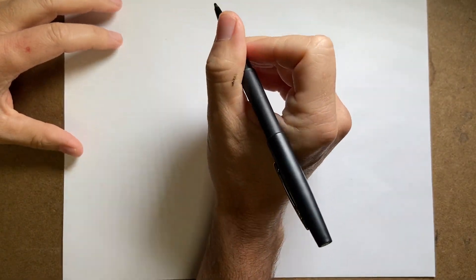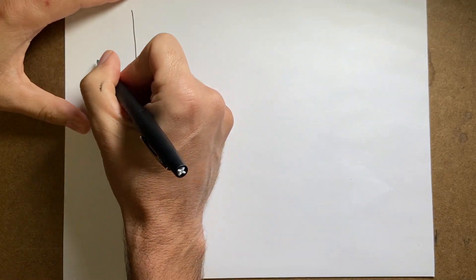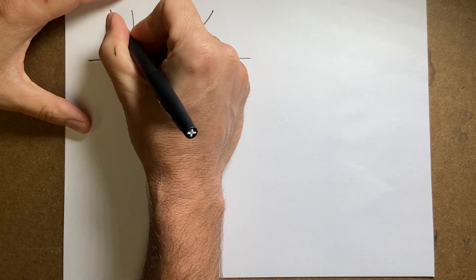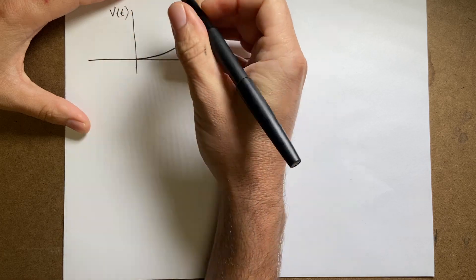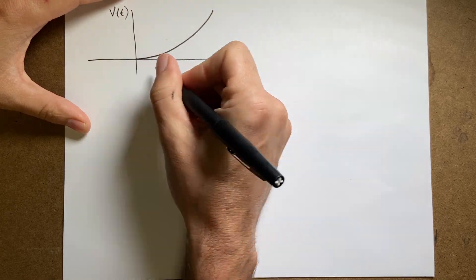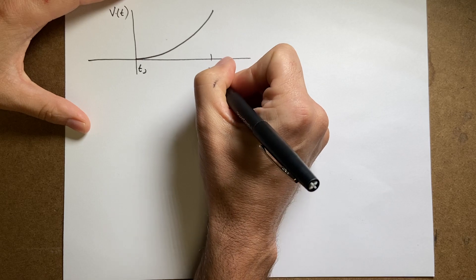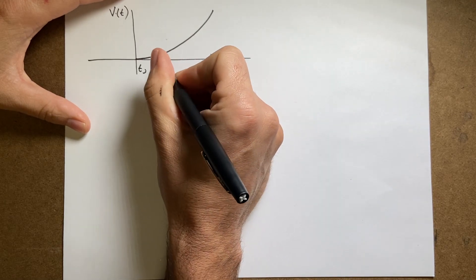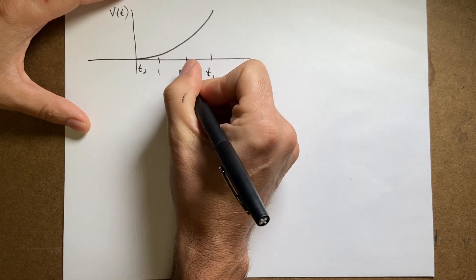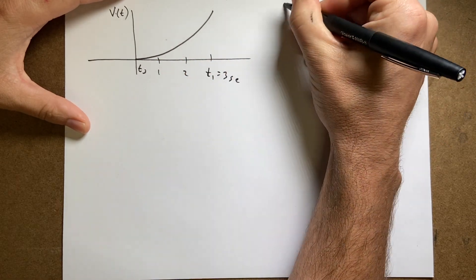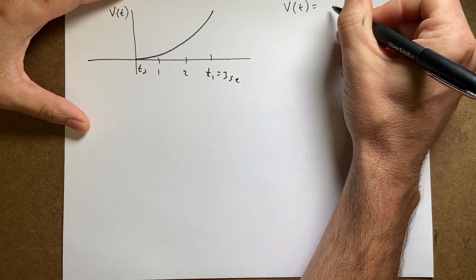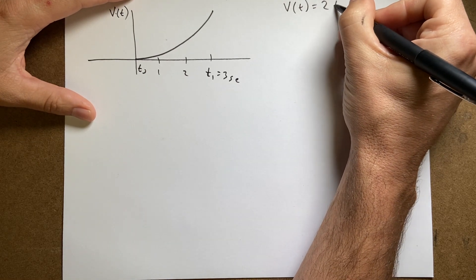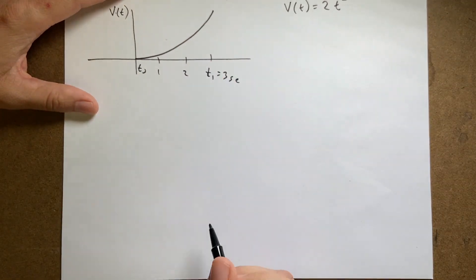I want to find displacement using a simple function. My velocity as a function of time goes from t₀ to t₁ — from 0 to 3 seconds. Let's say v(t) equals 2t², which is a parabola. The constant 2 would have appropriate units. This is not constant acceleration — it's something different.